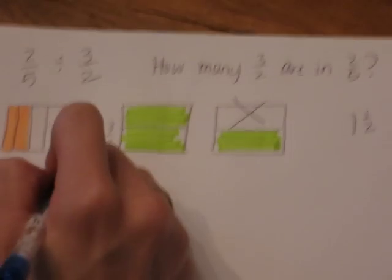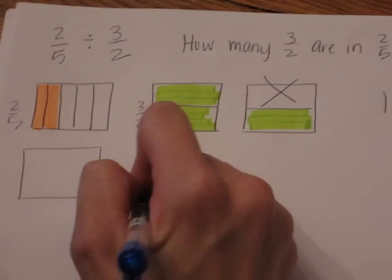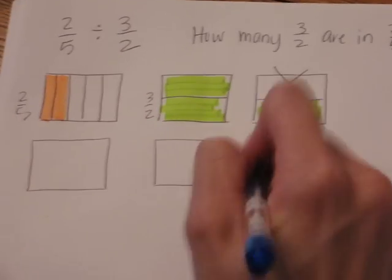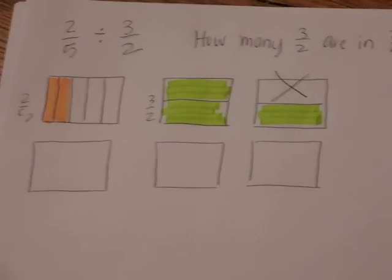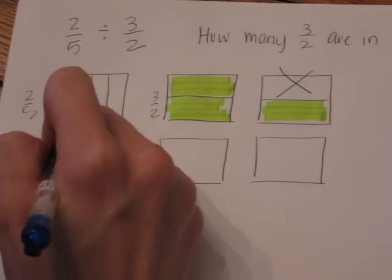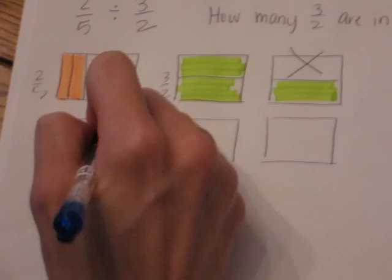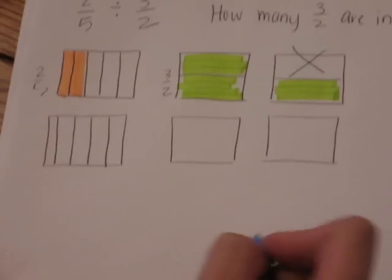Alright, I'm going to draw them again. Because right now, we're trying to compare fifths and halves. Well, I can't do that because we don't have common denominators. So this next step is the picture method of creating common denominators.